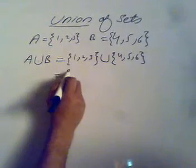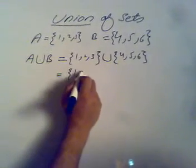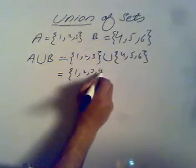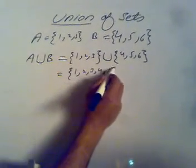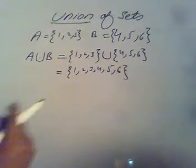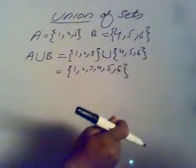So we will just combine these two sets. The result would be 1, 2, 3, 4, 5, 6. This is the union of these two sets.